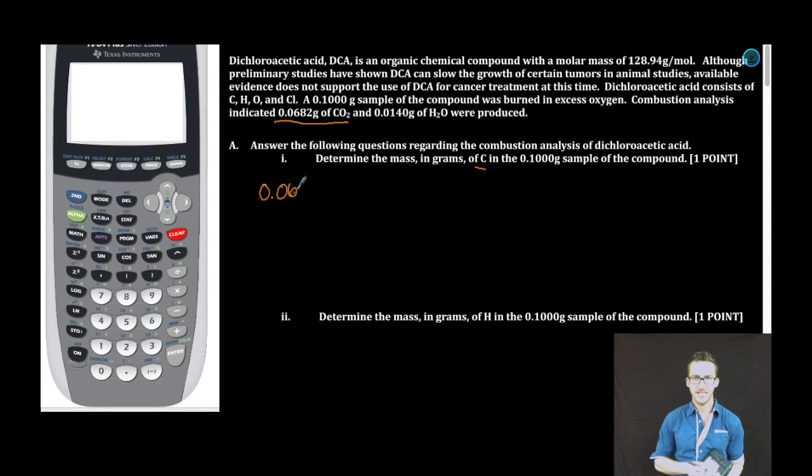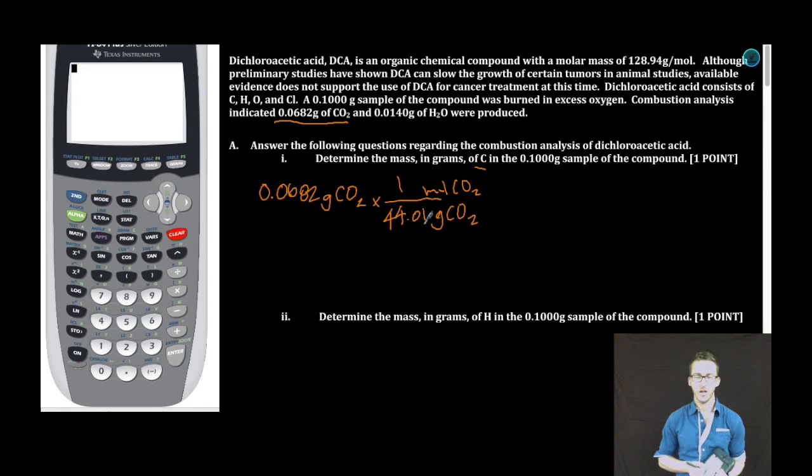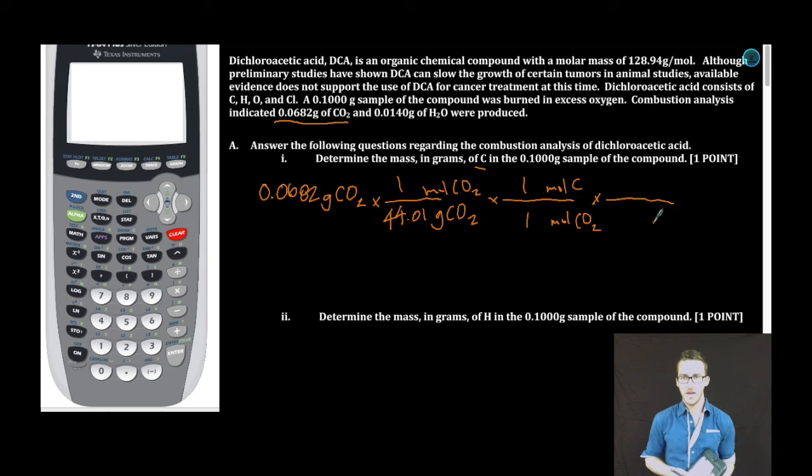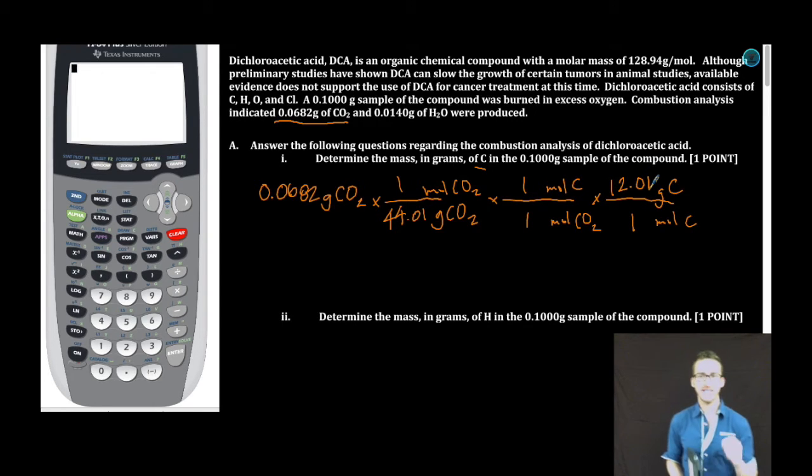Boom! 0.0682 grams carbon dioxide. Gonna convert to moles. Grams to moles: 1 mole, 44.01 grams. Again, that mass is coming from adding 1 carbon and 2 oxygen. Let's think about the relationship between carbon dioxide and carbon. For every 1 mole of CO2, there is 1 mole of carbon. So if I know how many moles of carbon dioxide were formed, I also know how many moles of carbon there are. Then we're just gonna convert back to grams to get my mass of carbon. Again, this relationship comes from the periodic table. Calculator time.